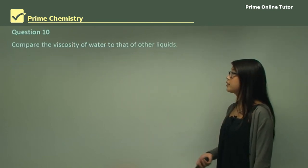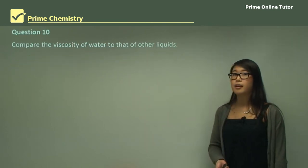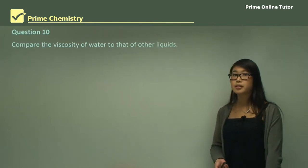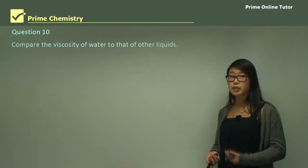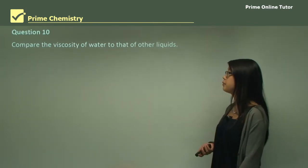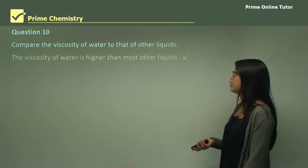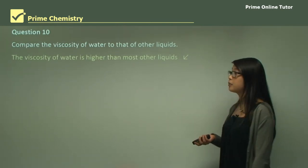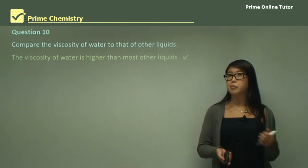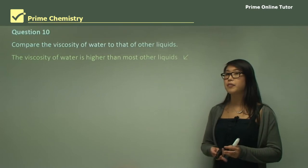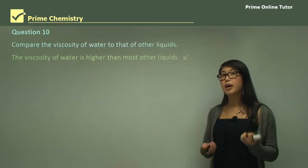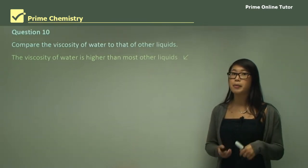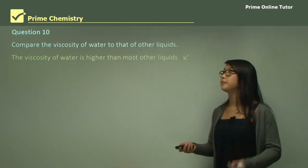Comparing the viscosity of water to other liquids: the viscosity of water is higher than most other simple liquids because, even though water is quite small, it has a lot of hydrogen bonds which pull molecules together, making it more viscous than, say, hexane.